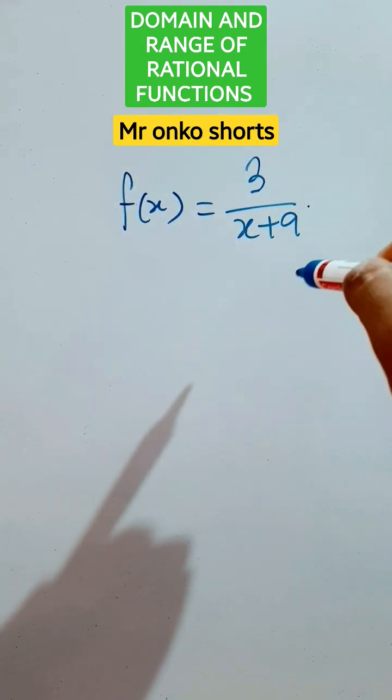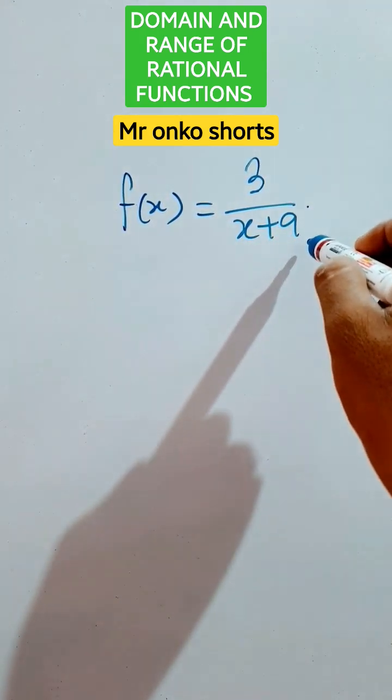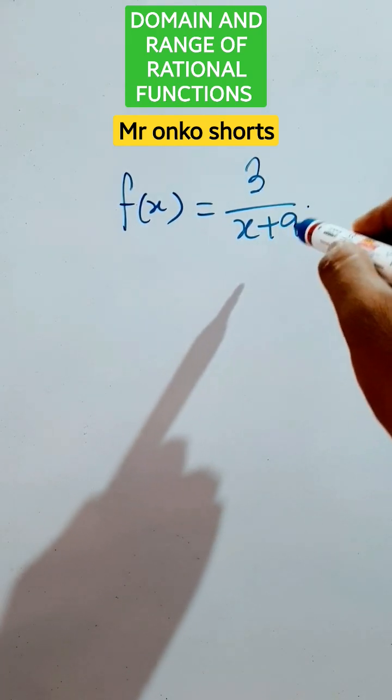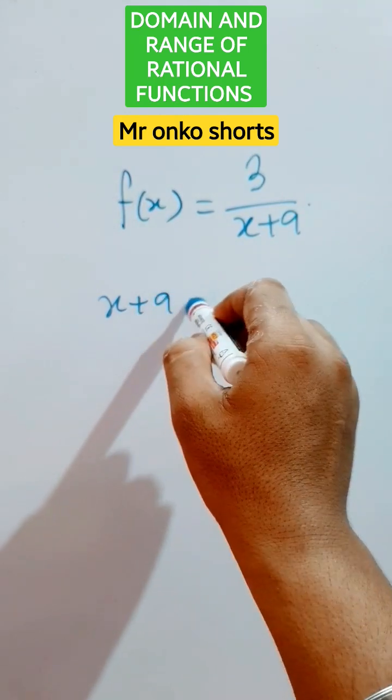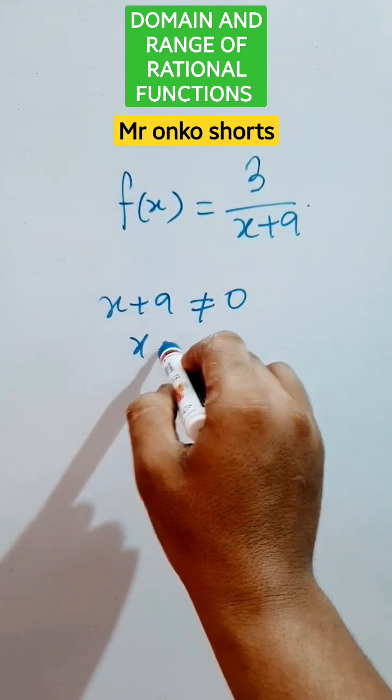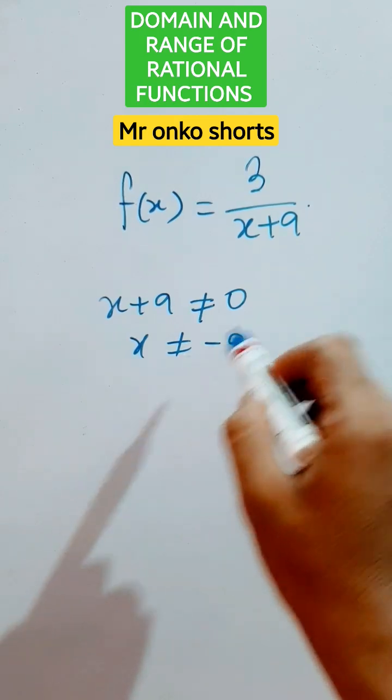Now, first we have to observe the denominator part which is x plus 9 which can't be equal to 0, otherwise the function will be undefined. So x plus 9 can't be equal to 0, which is providing x is not equals to minus 9.